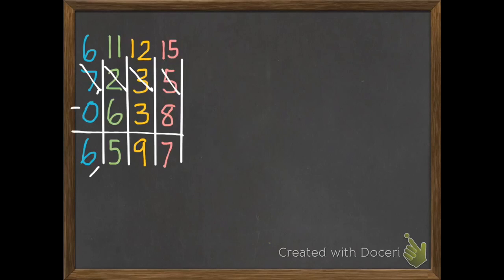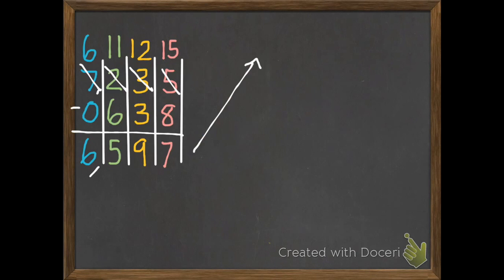We always want to check our work. In our last lesson we used rounding to see if our answer was reasonable. A more accurate way that works well with subtraction is using addition to check your work, although you can still use rounding. What you do is take your difference and put it on top, flipping everything around.